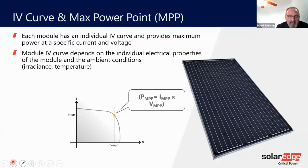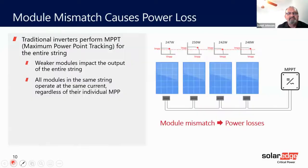The problem is that under various conditions, they can affect that actual point. It could be internal, like module properties, or external, like environment conditions such as temperature and irradiance. Traditional systems based on a single inverter connected to solar panels that are connected in series have significant limitations.